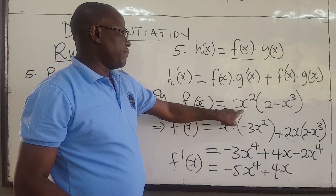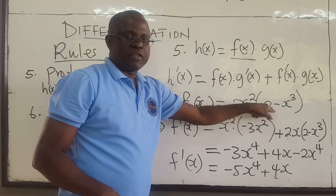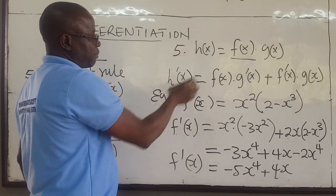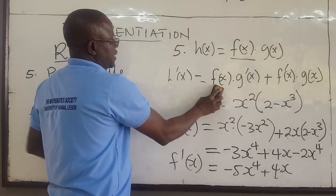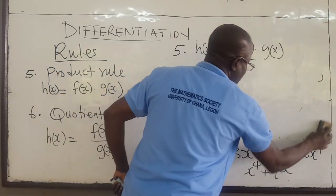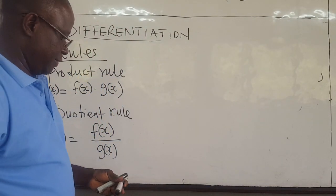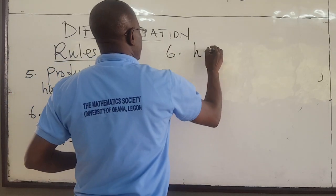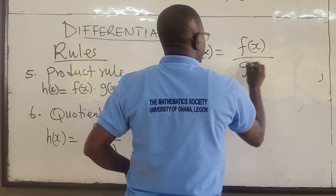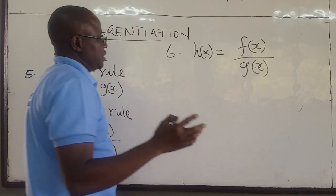Again, I could have started by finding the derivative of the second factor and leaving the first, then leaving the second and finding the derivative of the first. Now, the next rule we want to look at is the quotient rule — rule number six. Suppose your function h(x) is f(x) over g(x). Here, the order in which you do things is very important.